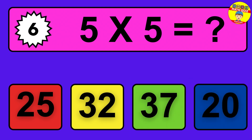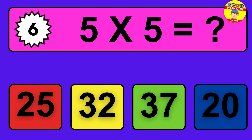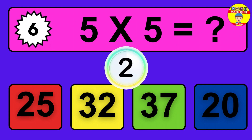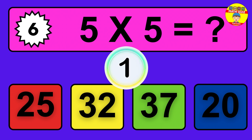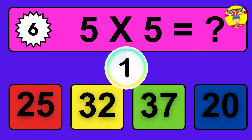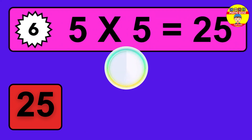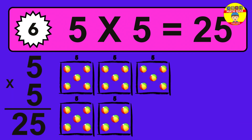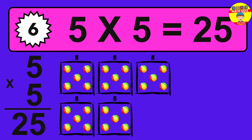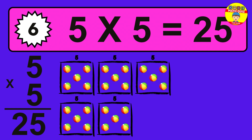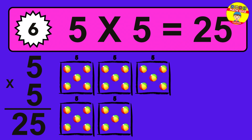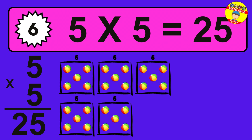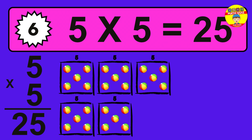Question 6. 5 times 5 equals what? The answer is 5 times 5 is 25. To calculate, we have 5 groups with 5 balls each one. So how many balls do we have? 25 balls.